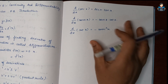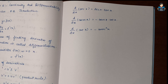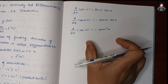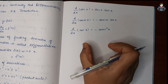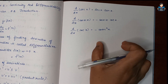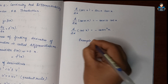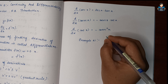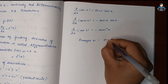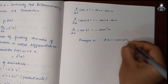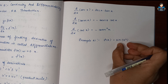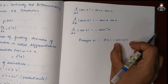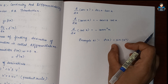We need to memorize these formulas. Now let's solve Example 21. Find the derivative of the function given by f of x equal to sin of x squared. This is a function of a function — x squared is one function and sin x is another function — so this is a composite function. We differentiate using the chain rule.